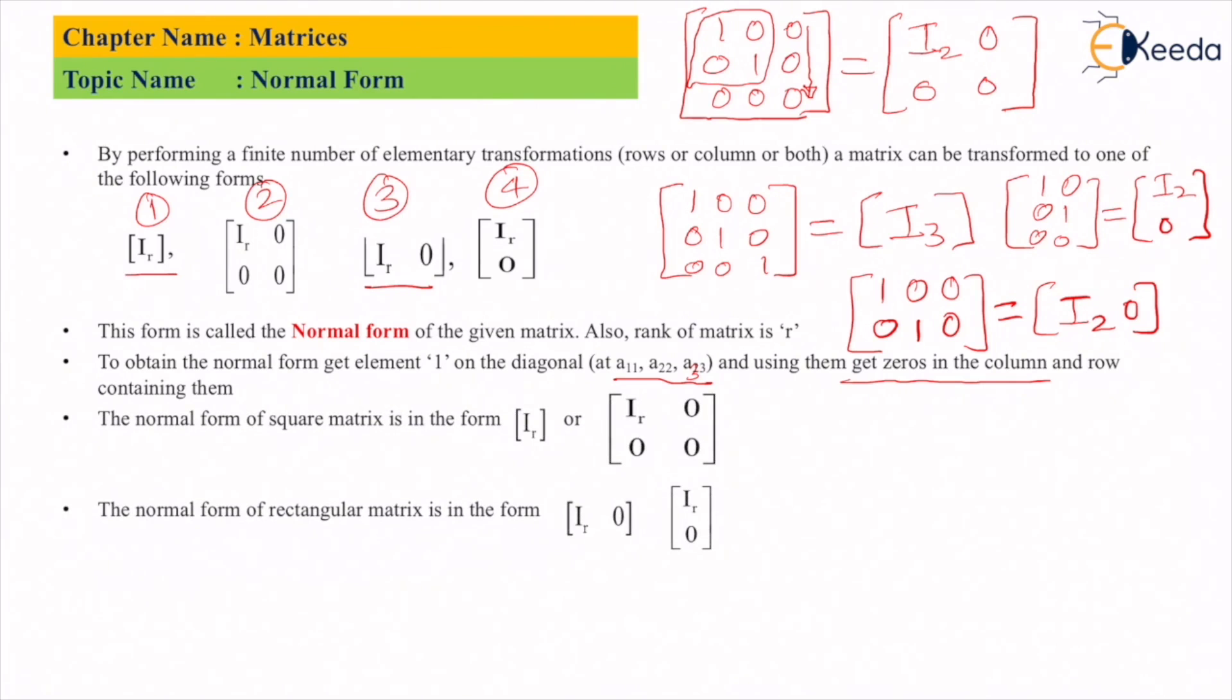There are two tips which you can remember because they will be helpful while getting the normal form. If you have a square matrix, you may get the normal form I_r, or you may get the normal form I_r with zeros.